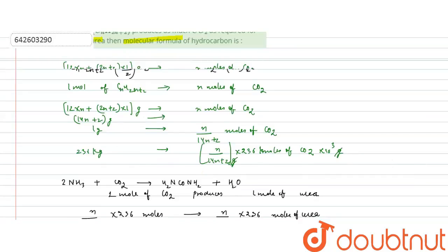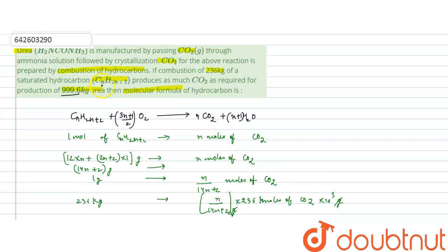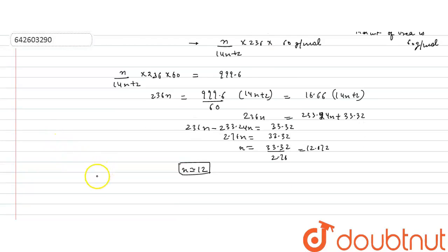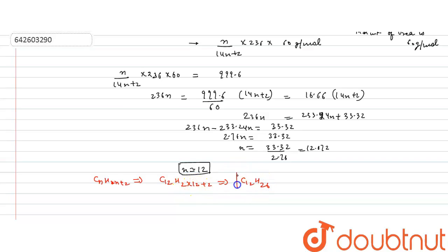Now substituting n = 12 into the general formula CₙH₂ₙ₊₂: C₁₂H₂×₁₂₊₂ = C₁₂H₂₆. Therefore, the molecular formula of the saturated hydrocarbon is C₁₂H₂₆.